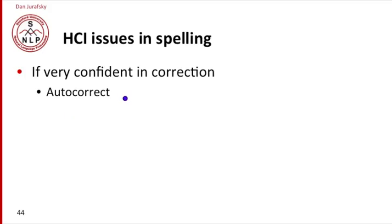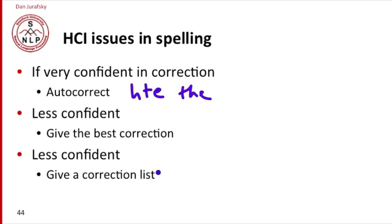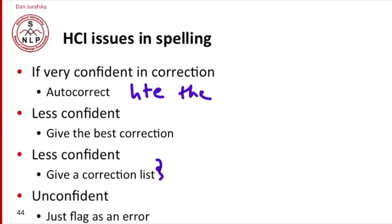That happens very often, as with the example HTE, which is a very common misspelling of T-H-E. If we're slightly less confident, we might want to give a single best correction but ask the user to say yes or no to it. If we're even less confident, we might want to give the user a whole list and let them pick. And if we're unconfident at all but pretty sure we saw an error and just don't know how to fix it, we might just flag what the user typed as an error.